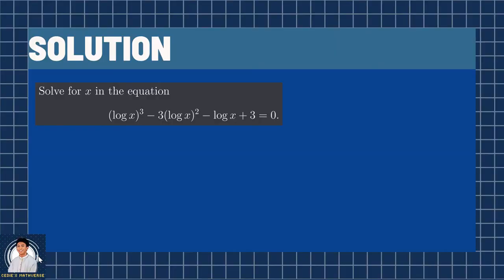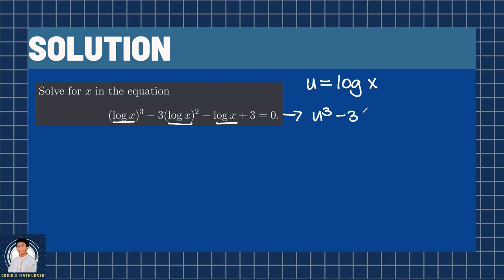The solution to this problem involves two things: one, knowledge about logarithms, and number two, factoring by grouping. In solving this equation, we let u equal the logarithm of x. Due to this, all of the logarithm x terms here will be replaced with u. So this equation becomes u cubed minus 3u squared minus u plus 3 equals 0.